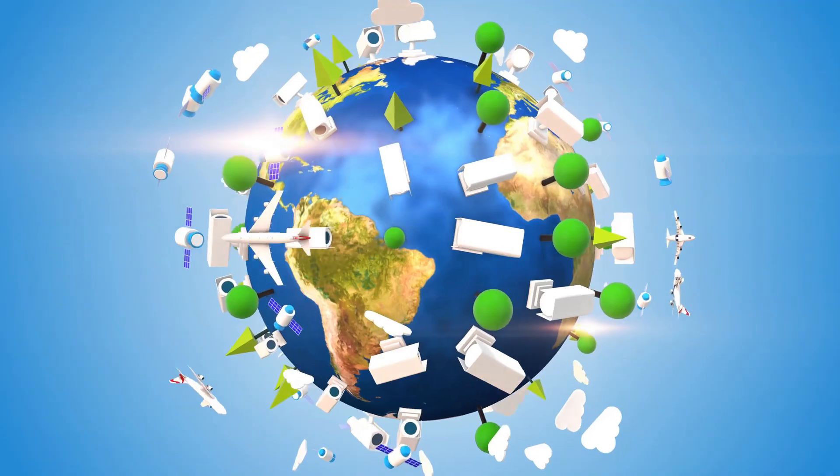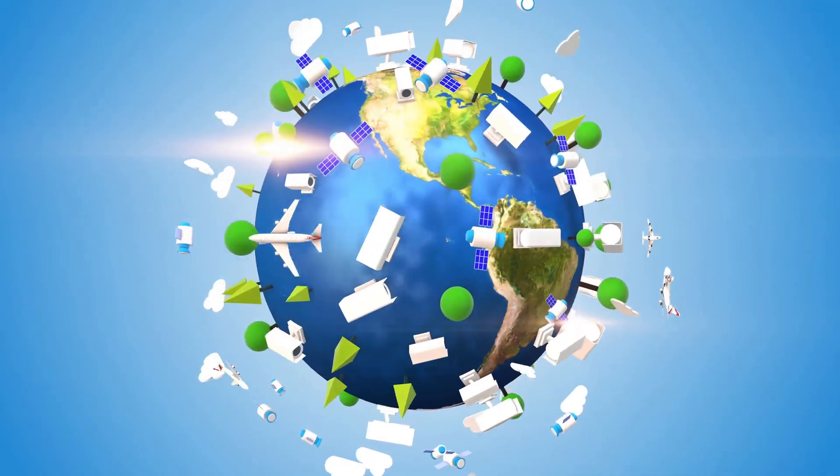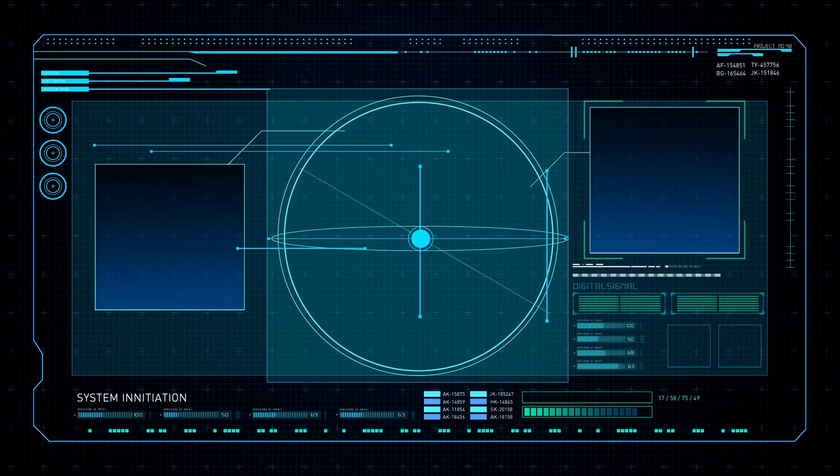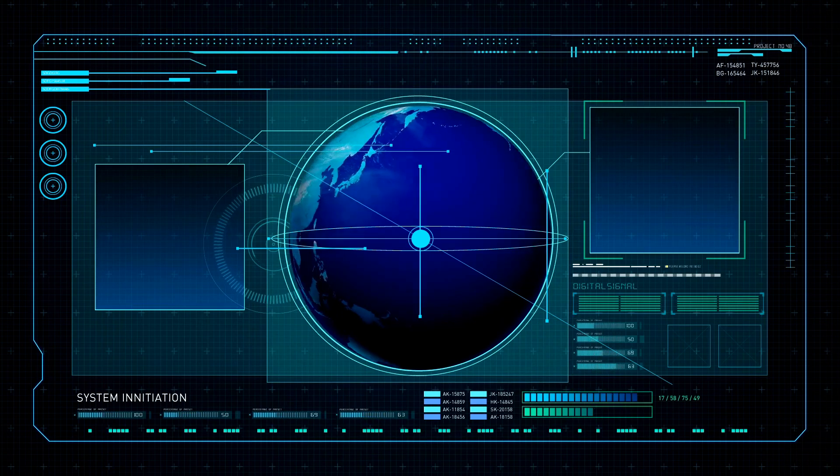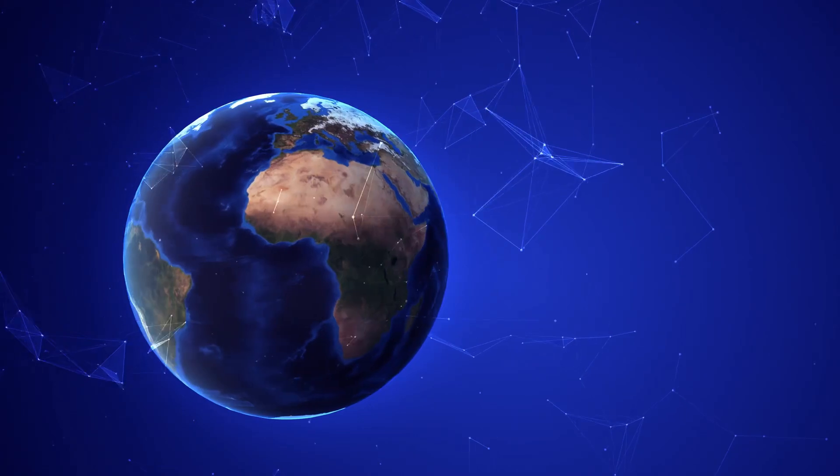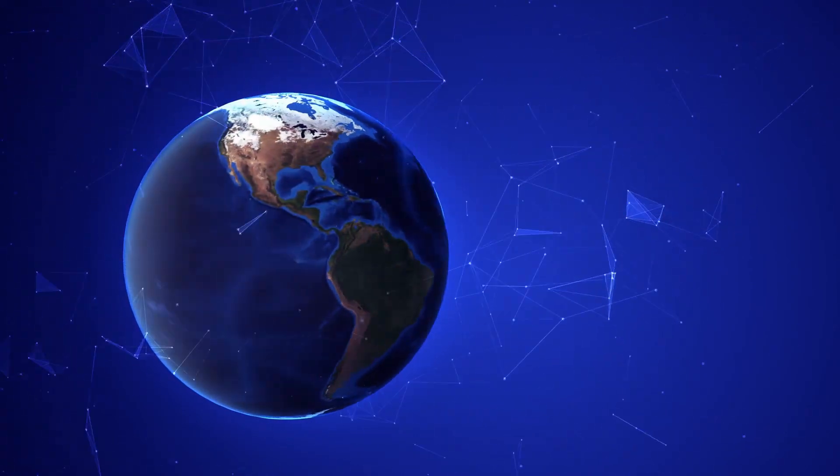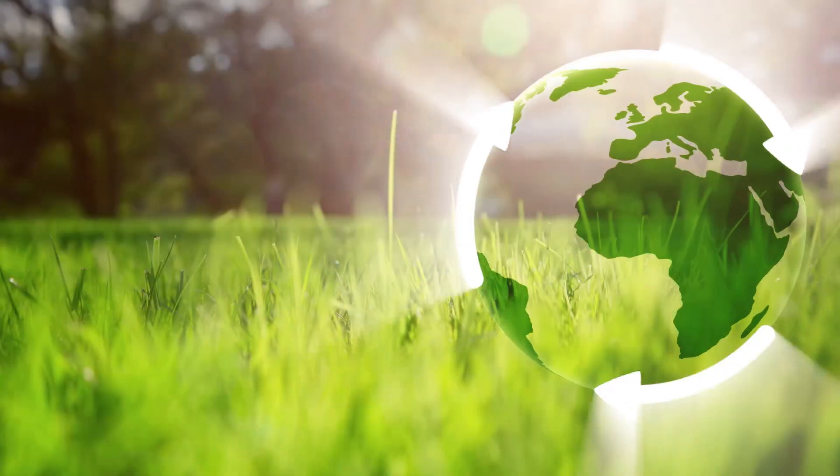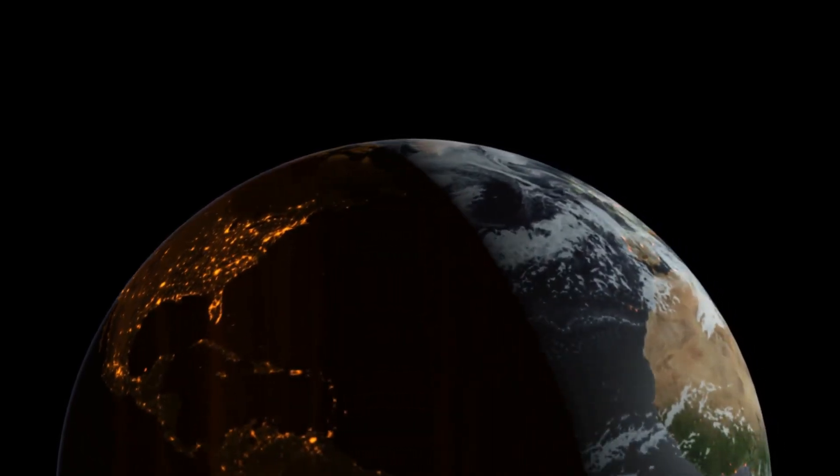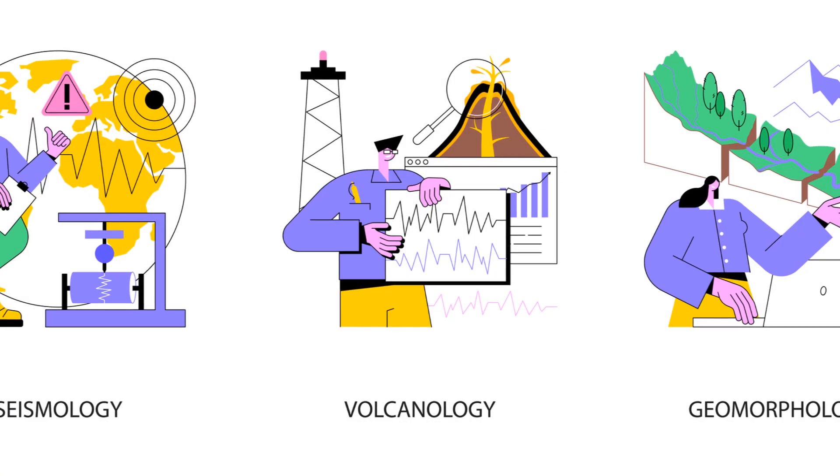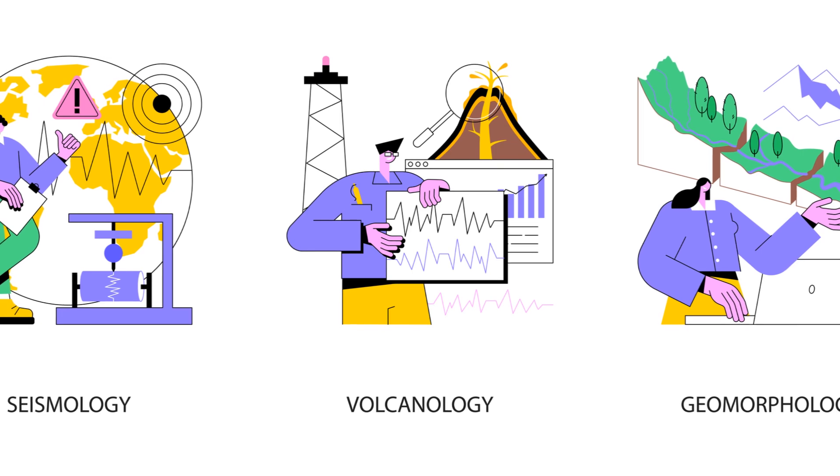The intriguing notion of Earth as a living entity finds scientific grounding in the Gaia hypothesis. Proposed by chemist James Lovelock and microbiologist Lynn Margulis in the 1970s, this hypothesis posits that Earth's living and non-living components interact in a complex and self-regulating system, maintaining conditions suitable for life. Imagine Earth as a giant super-organism, with its atmosphere, oceans and land masses acting as organs, and its diverse life forms serving as cells. This interconnected system, according to the Gaia hypothesis, actively regulates its temperature, atmospheric composition and ocean salinity to maintain a stable and habitable environment for life.